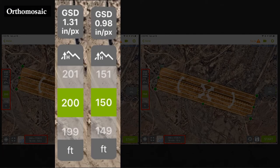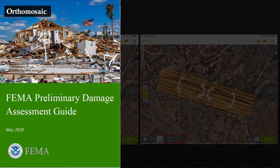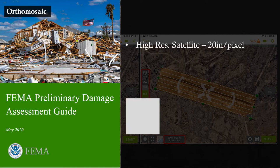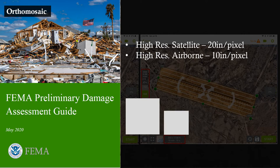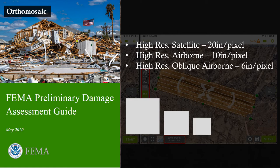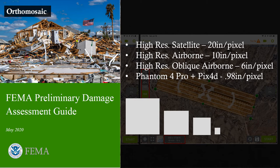With potential spatial resolutions of 1.31 and 0.98 inches per pixel, what does that mean in context? FEMA publishes the Preliminary Damage Assessment Guide, which includes an appendix providing guidance on preferred resolutions for airborne imagery. Satellite imagery should be at least 20 inches per pixel, high-res airborne shots should be 10 inches per pixel, and FEMA prefers high-res oblique shots at 6 inches per pixel. By comparison, the Phantom 4 Pro with PIX4D achieves 0.98 inches per pixel at 150 feet — smaller pixels mean finer details and better quality.